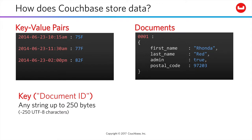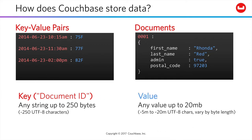As a result, the key to a stored document is commonly called its Document ID, and can be any string value up to 250 bytes, or about 250 characters. The value can be anything up to 20 megabytes, which would be anything from 5 to 20,000 characters or so, depending on the byte length of the character set in use.